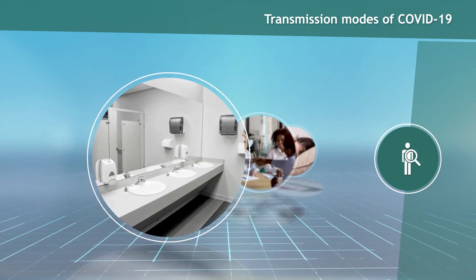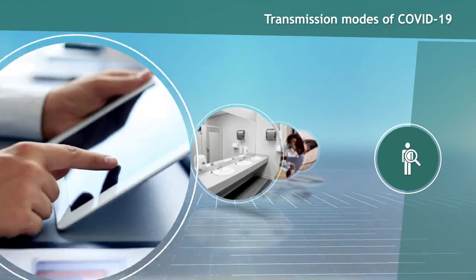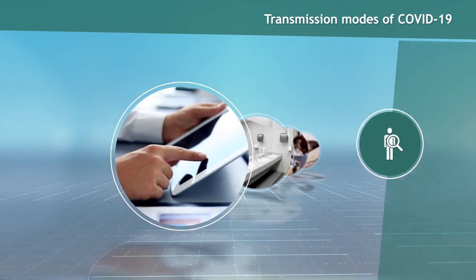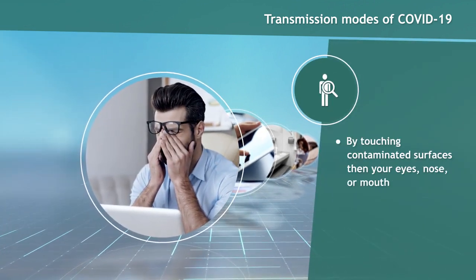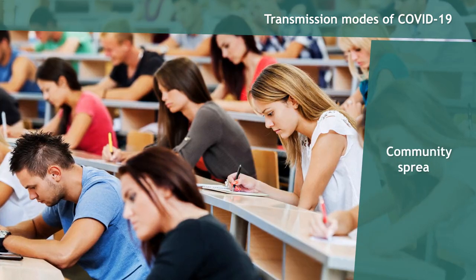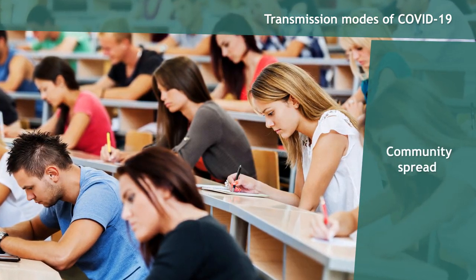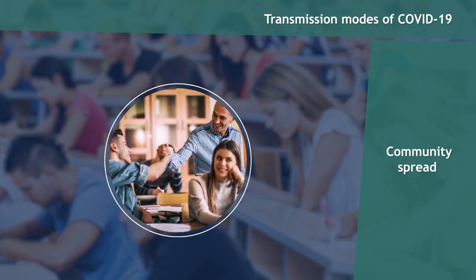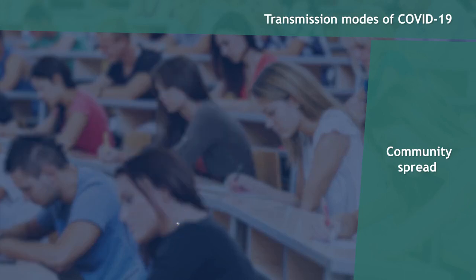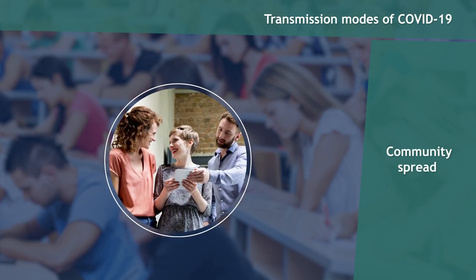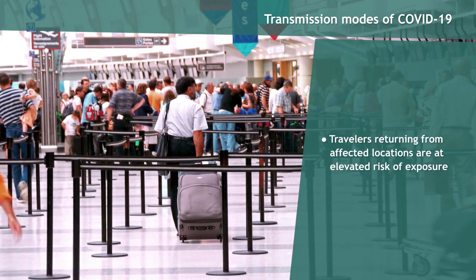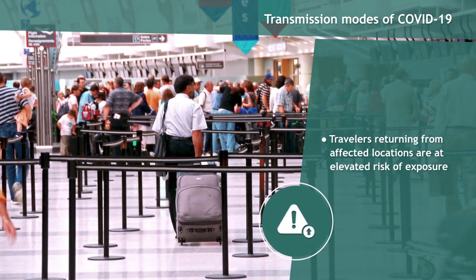Additionally, spread of the disease may be possible through contact with a contaminated surface or object on which the virus may persist, then touching your eyes, nose, or mouth. Community spread refers to the spread of an illness within a community, where people have unknowingly been in contact with an infected person or persons. Someone exposed to COVID-19 may become a carrier before they become symptomatic.